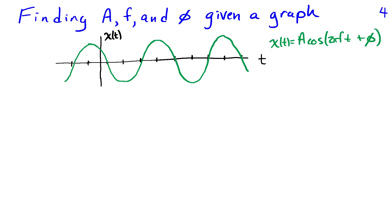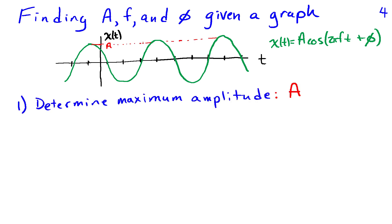Now for the reverse problem: given a graph of a sinusoid, identify A, F, and φ. We start by finding A — the maximum amplitude of the sinusoid. Looking at the vertical axis, find the value corresponding to the maximum, and that is A.